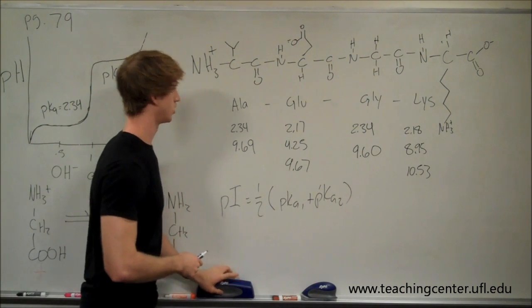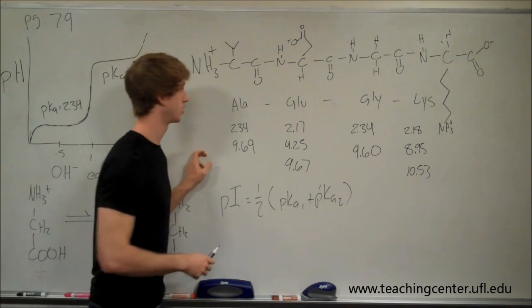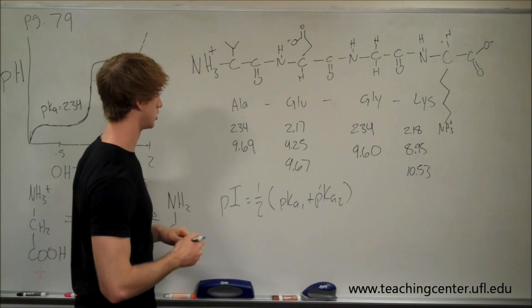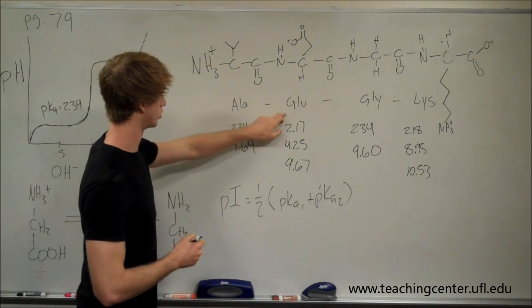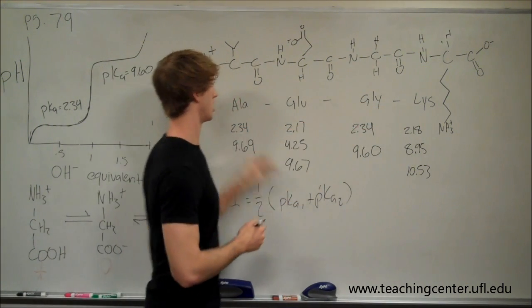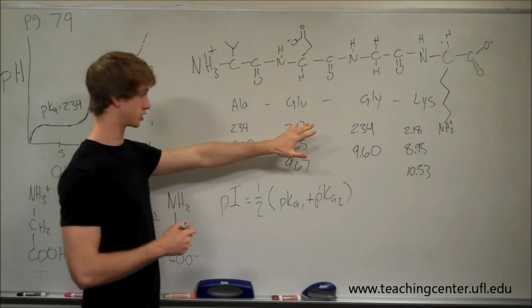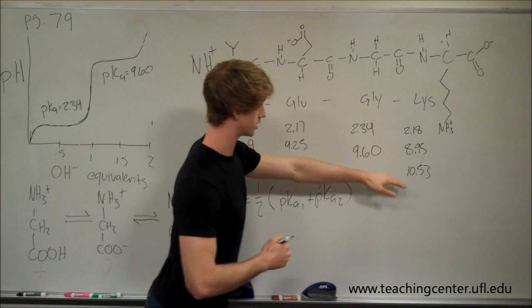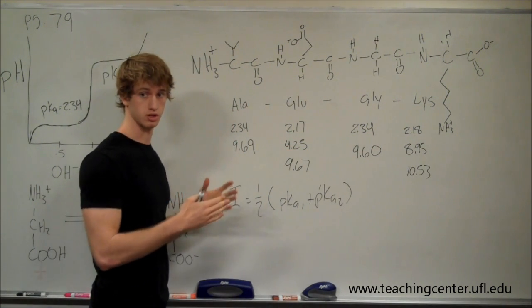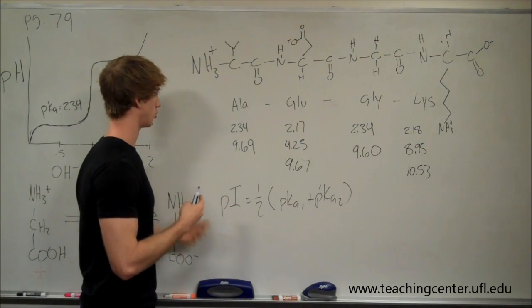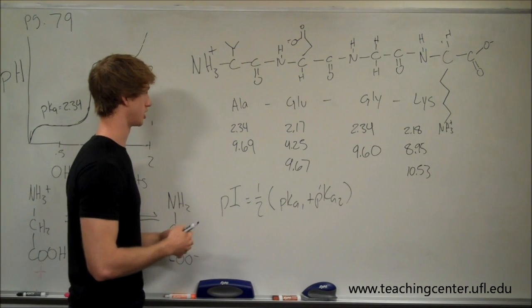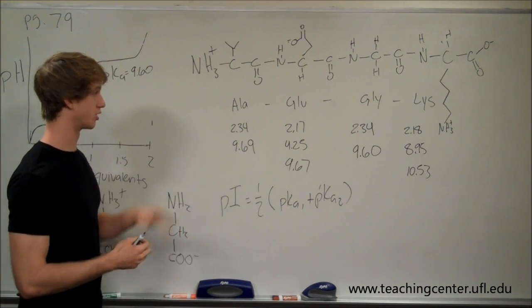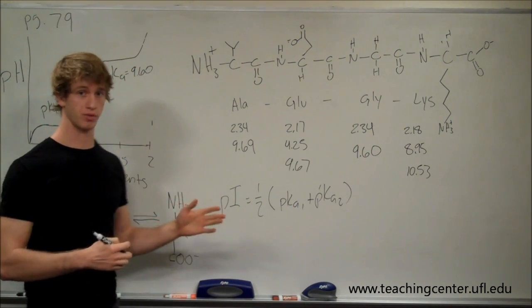Now let's look over here. This is a problem from your notes. It's just a short peptide. We have alanine, glutamate, glycine, and lysine. And I've drawn it all out for you so you get a better idea of what's going on. And then we have all these different pKa's for all the different moieties that can affect the pH. Now there's a lot of information here, and it turns out a lot of it we don't really need.